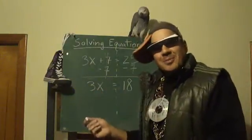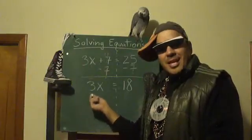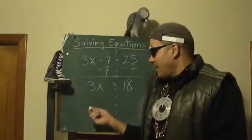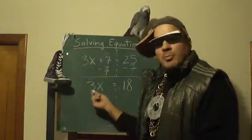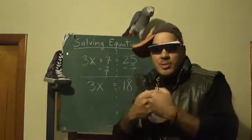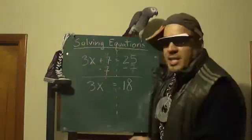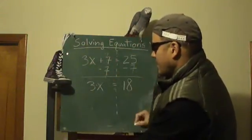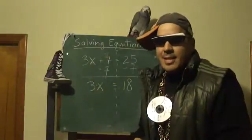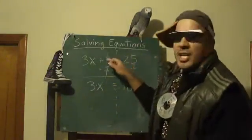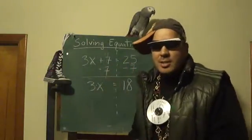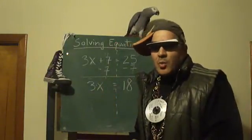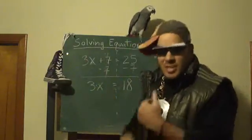When you see 3x, 3 is the coefficient and x is the variable. You know there's multiplication going on between those two — they're connected by multiplication, there's a little dot: 3 times x.